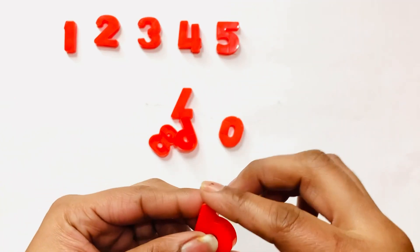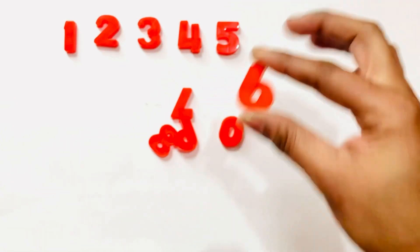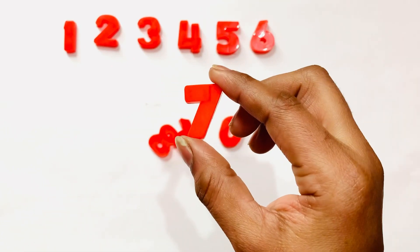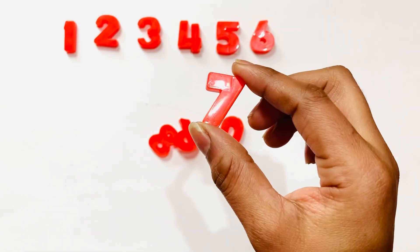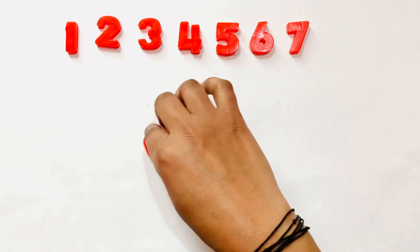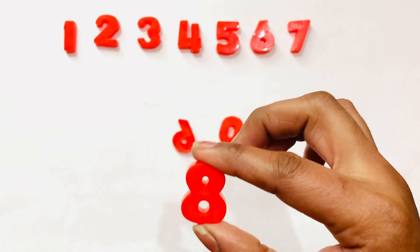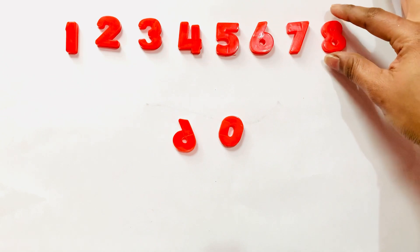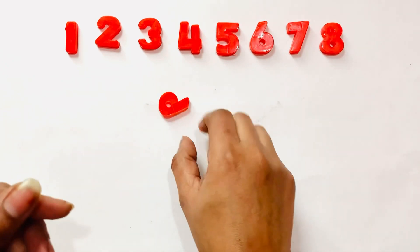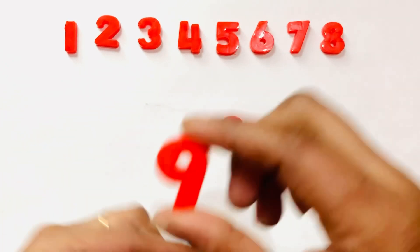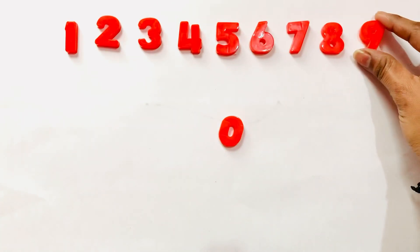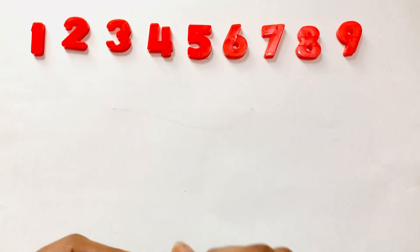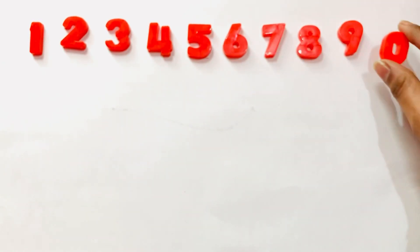Next I pick number six, next number is number seven, next number is number eight. Now I pick next number, that number is number nine. Now I have to pick next number is number zero.